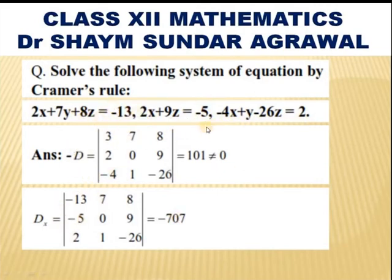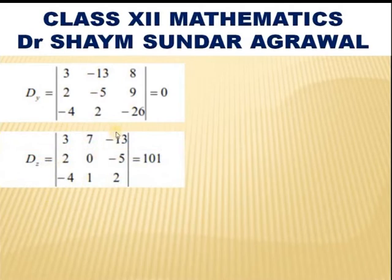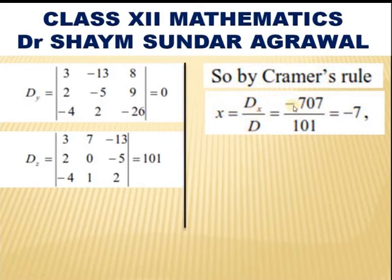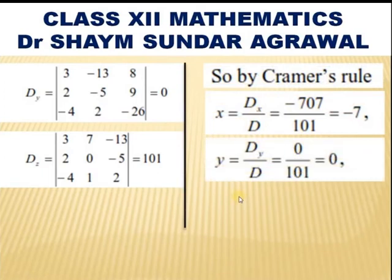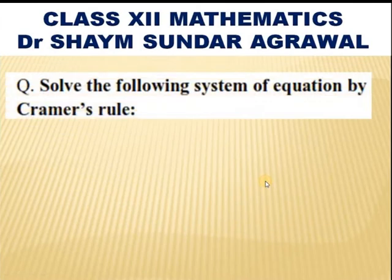Dx is formed by replacing the coefficients of x with −13, −5, 2, and its determinant is −7. Dy is formed by replacing the coefficients of y with −13, −5, 2, and its determinant is 0. Dz is formed by replacing the coefficients of z with −13, −5, 2, and its determinant is 1. Since D ≠ 0, x = Dx/D = −7/1 = −7, y = Dy/D = 0/1 = 0, and z = Dz/D = 1/1 = 1.